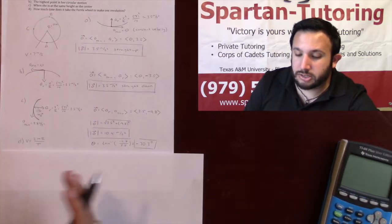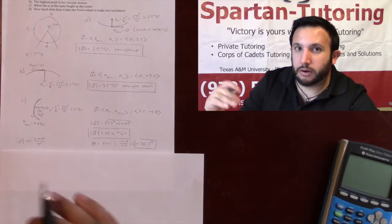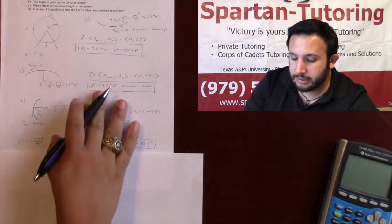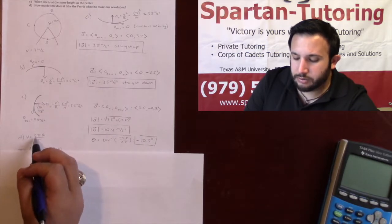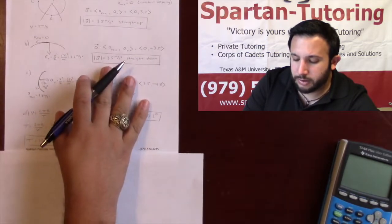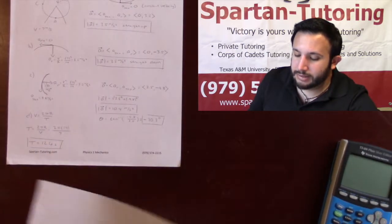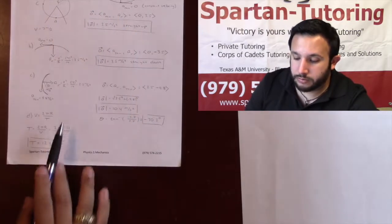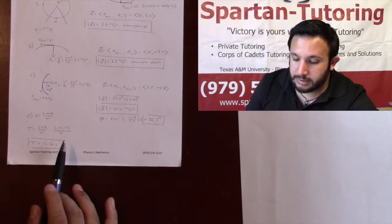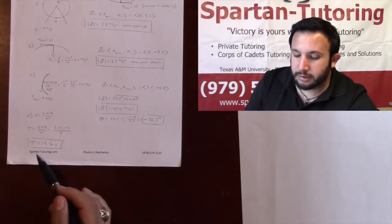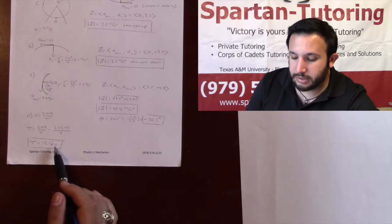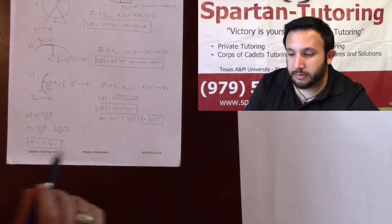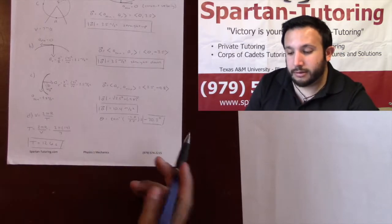For Part D, how much time does it take for the ferris wheel to make one complete revolution? By definition, that's your period T. If your velocity V equals 2πR over T, then by algebra, T equals 2πR over V. We know R is 14 and V is 7. Throwing this into the calculator, you get 12.6 seconds. So it takes 12.6 seconds to make one complete revolution around this ferris wheel.